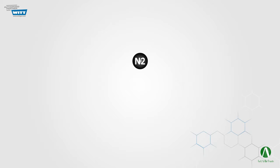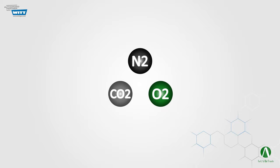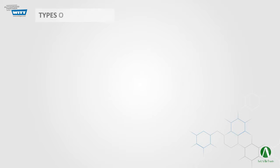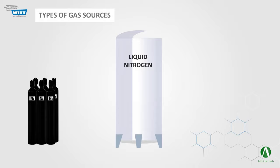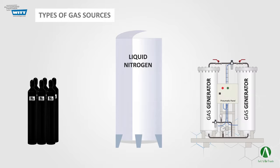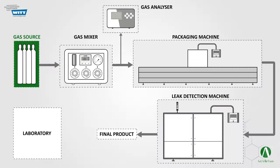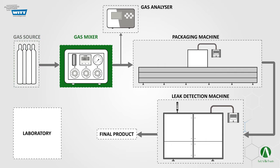By gas we mean nitrogen, carbon dioxide, and of course oxygen. These gas sources can be in the form of cylinders, cryogenic tanks, or in some cases gas generators. To start the process, these gases get transferred into the gas mixer to create the desired mixture of nitrogen, carbon dioxide, and oxygen for different types of foods.